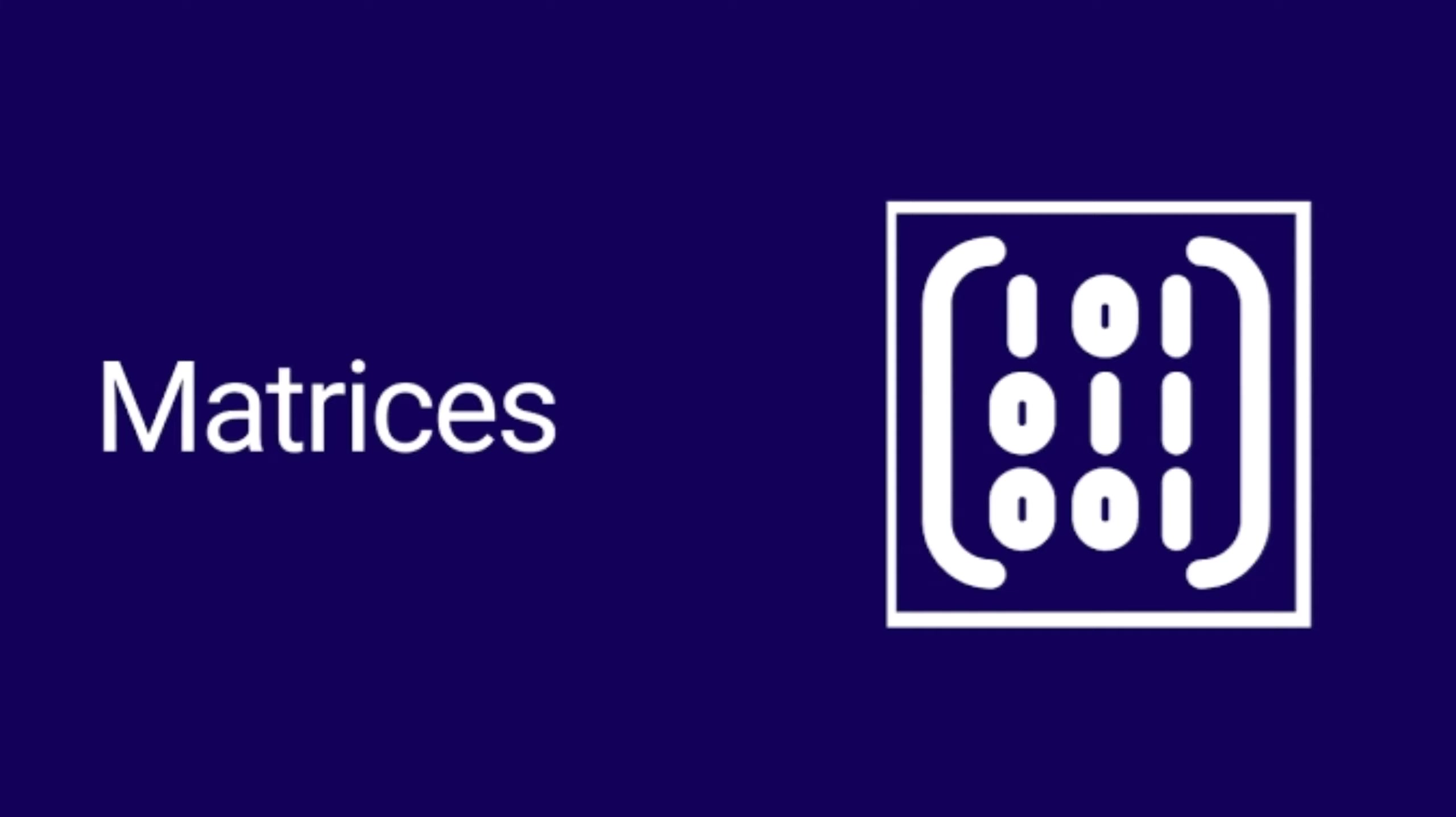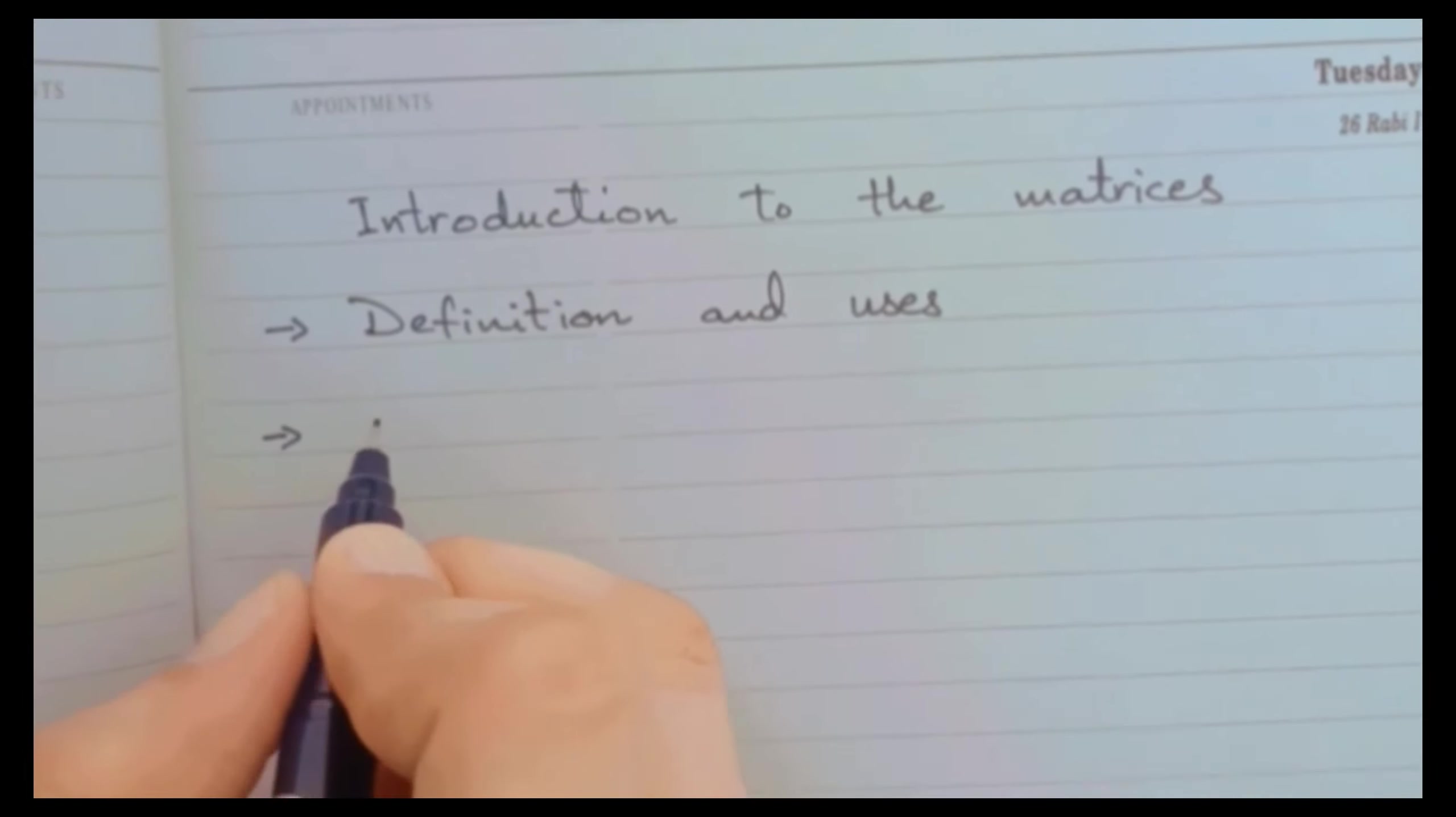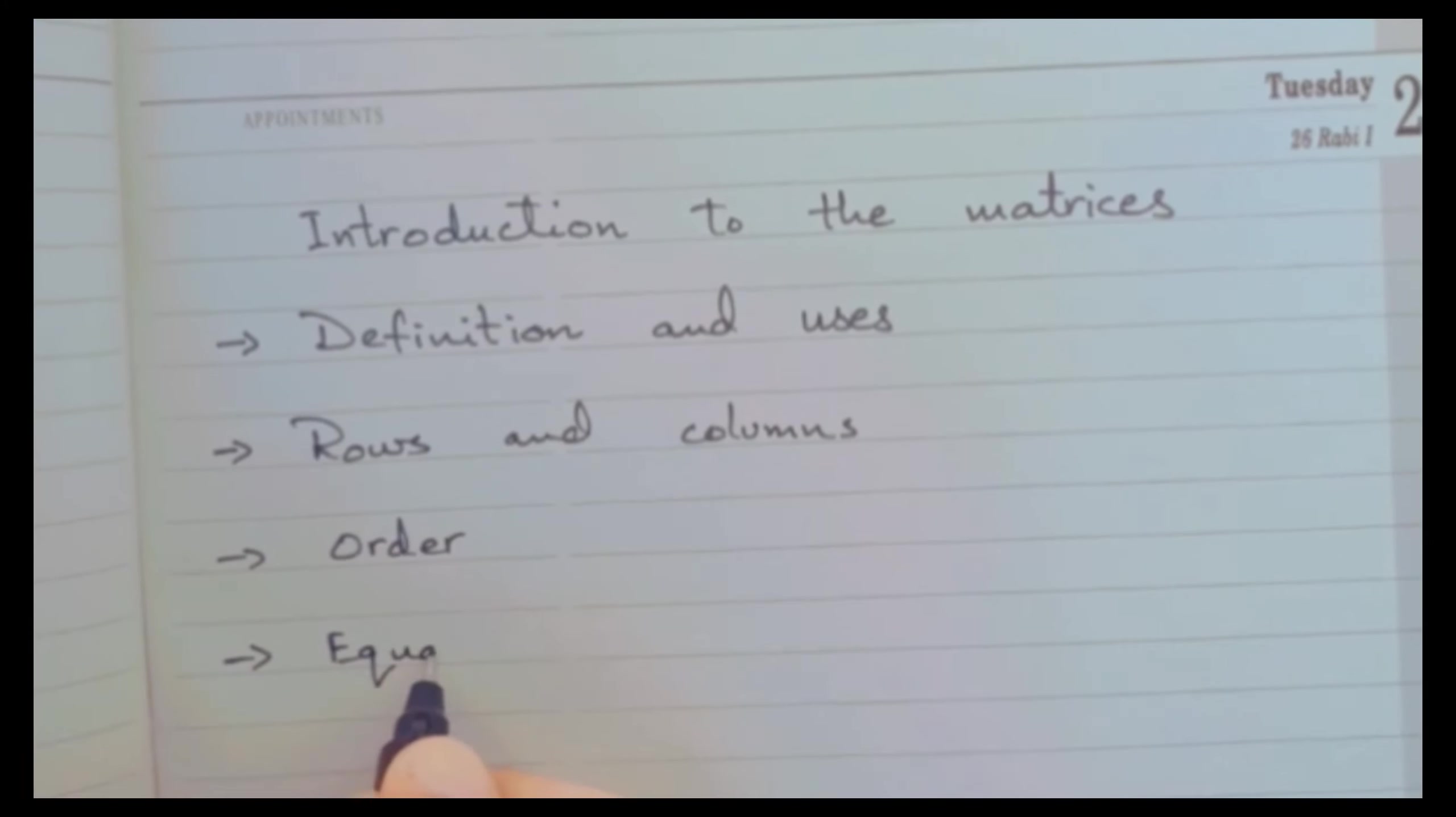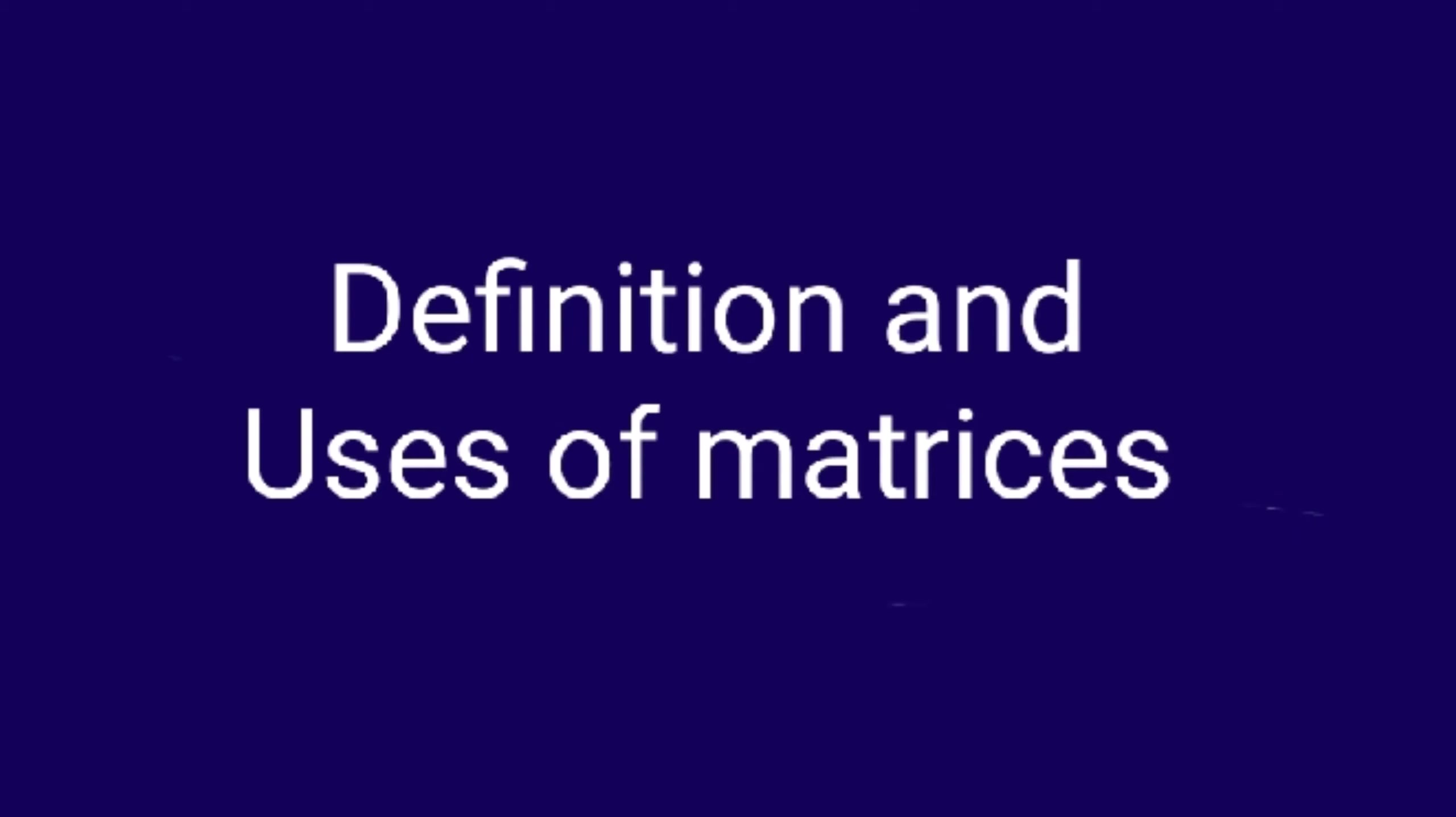So let's start our first lesson of Maths Book 9 with the name of Allah. We are going to do Introduction to Matrices, in which we will cover definition and uses of matrices, rows and columns of the matrix, order of the matrix, equal matrices, and also Exercise Number 1.1.